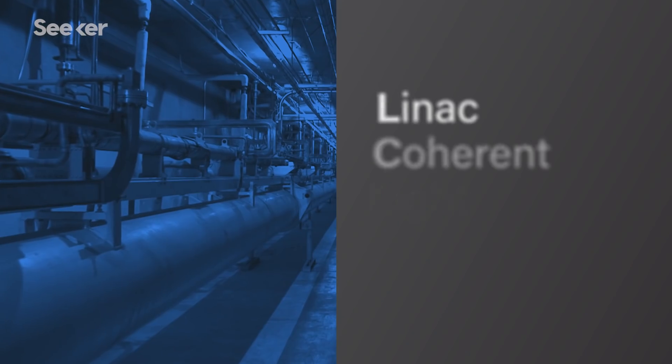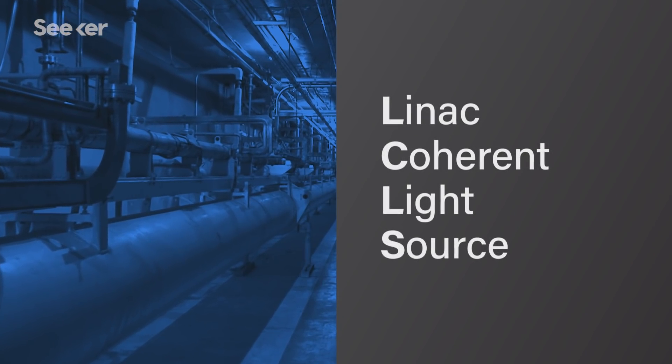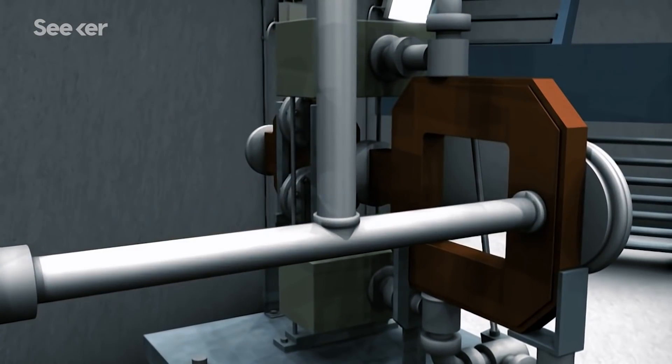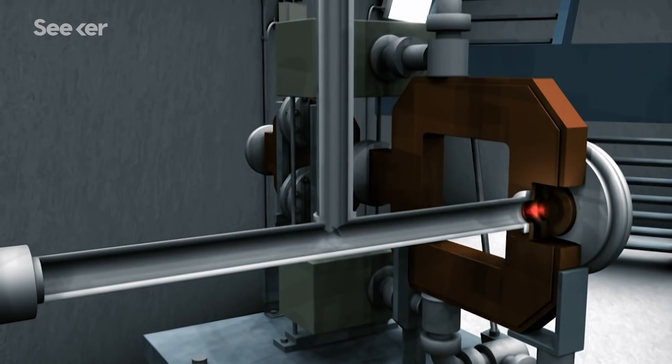The LCLS is short for the Linac Coherent Light Source. It's one of the world's first hard X-ray free electron lasers. The LCLS uses a particle accelerator to fire extremely bright electrons to create fast pulses of hard X-rays. Which is why the machine is called an X-ray laser.